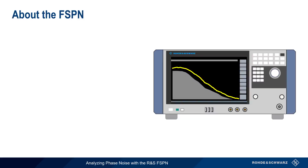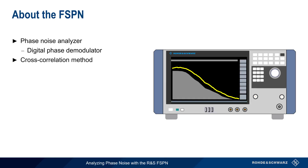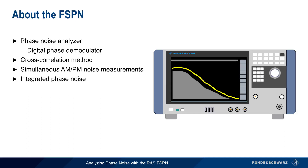Let's start with a brief overview of the FSPN. The Rohde & Schwarz FSPN is a phase noise analyzer that measures phase noise directly using a digital phase demodulator. The FSPN is configured with a second measurement path that allows phase noise measurements using the cross-correlation method, which improves both speed and sensitivity. In addition, the FSPN can make simultaneous but separate measurements of amplitude and phase noise, can make integrated phase noise measurements, can calculate Allan variance, and can be used to characterize voltage-controlled oscillators by means of integrated DC sources. In this presentation we'll focus on standard phase noise measurements, but separate presentations are also available on many of these other topics.